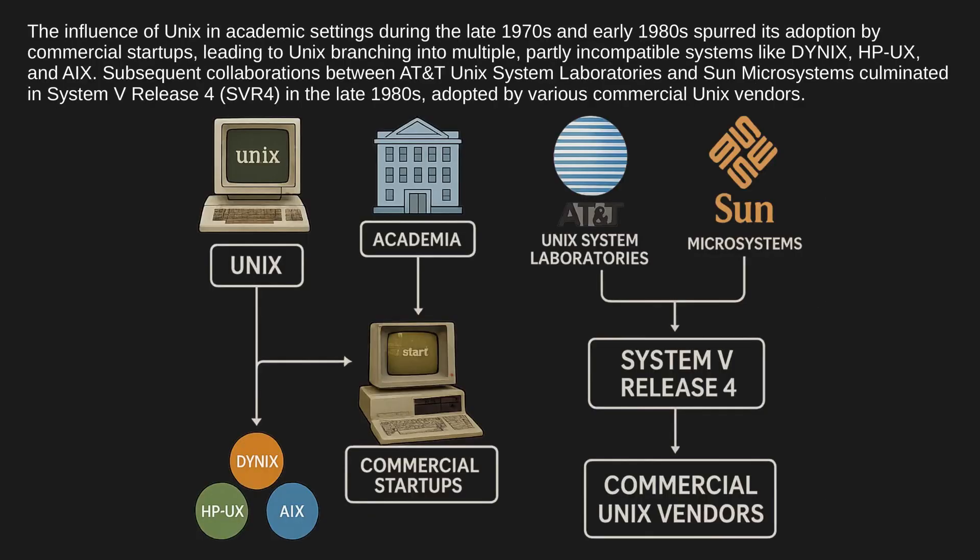The influence of Unix in academic settings during the late 1970s and early 1980s spurred its adoption by commercial startups, leading to Unix branching into multiple partly incompatible systems like Dynix, HP-UX, and AIX. Subsequent collaborations between AT&T Unix System Laboratories and Sun Microsystems culminated in System V Release 4 (SVR4) in the late 1980s, adopted by various commercial Unix vendors.